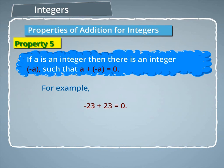For example, minus 23 plus 23 is equal to 0.